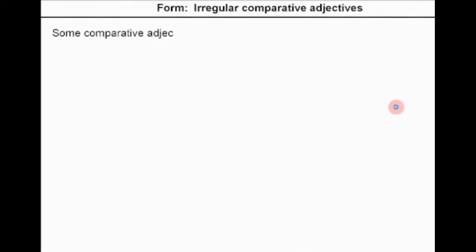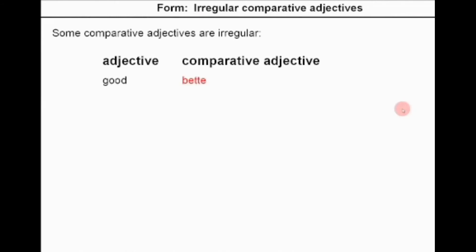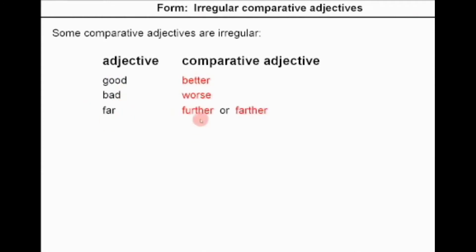The most important thing is that some comparative adjectives are irregular — they do not follow rules at all, so you have to memorize them. For example: good → better, bad → worse, far → further or farther, old → older or elder.